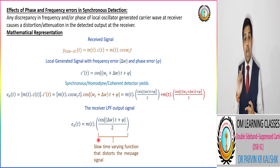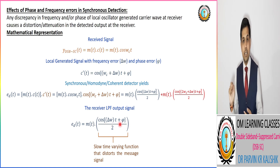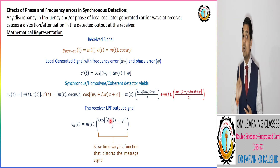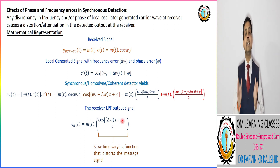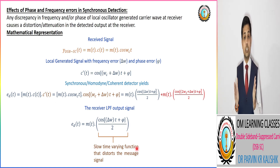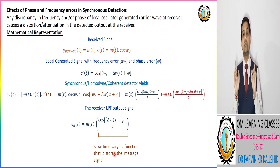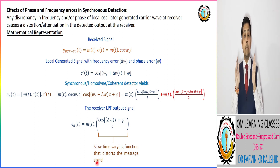With frequency and phase errors present, the output is m(t)/2 × cos(Δω·t + φ), where Δω corresponds to the frequency error and φ corresponds to the phase error. The term cos(Δω·t + φ) is a slow time-varying function that distorts the message signal.